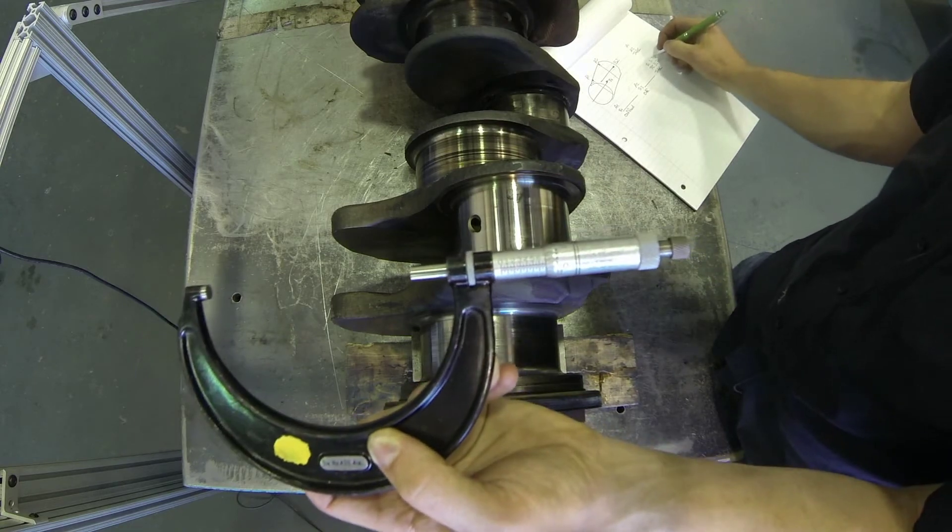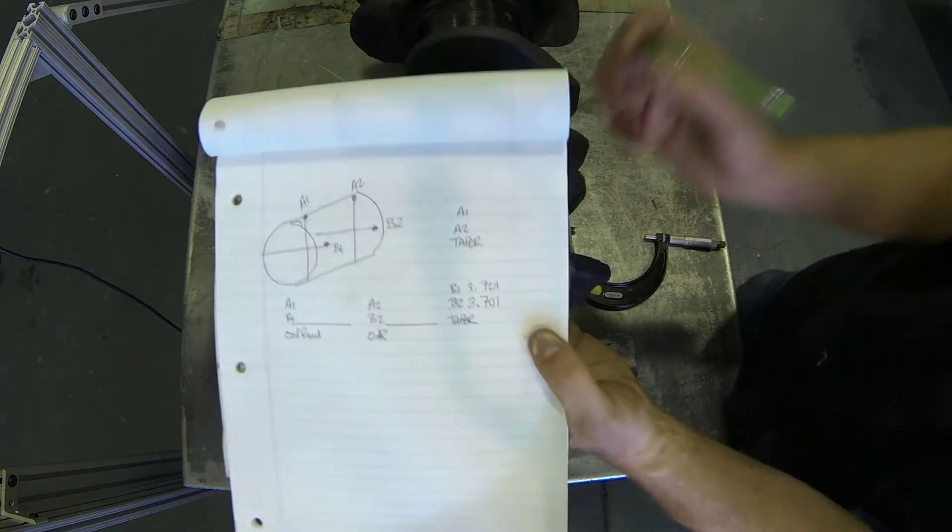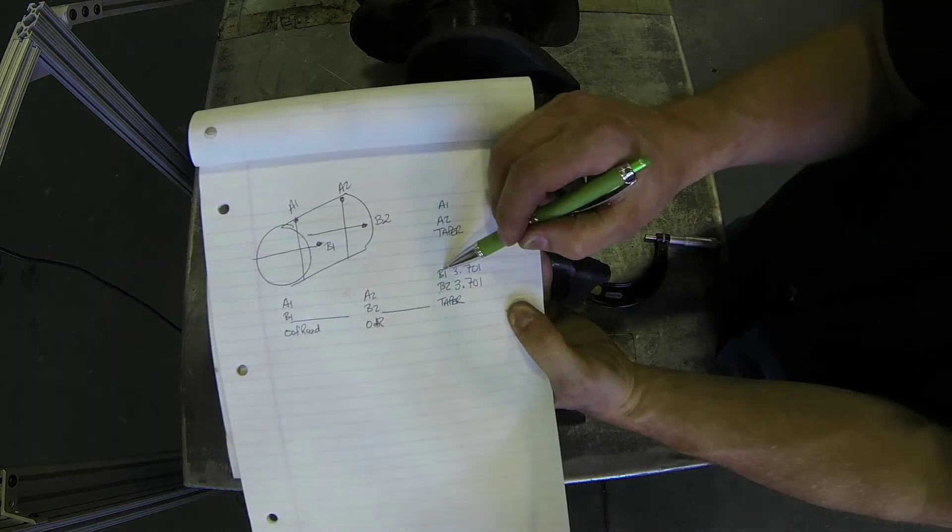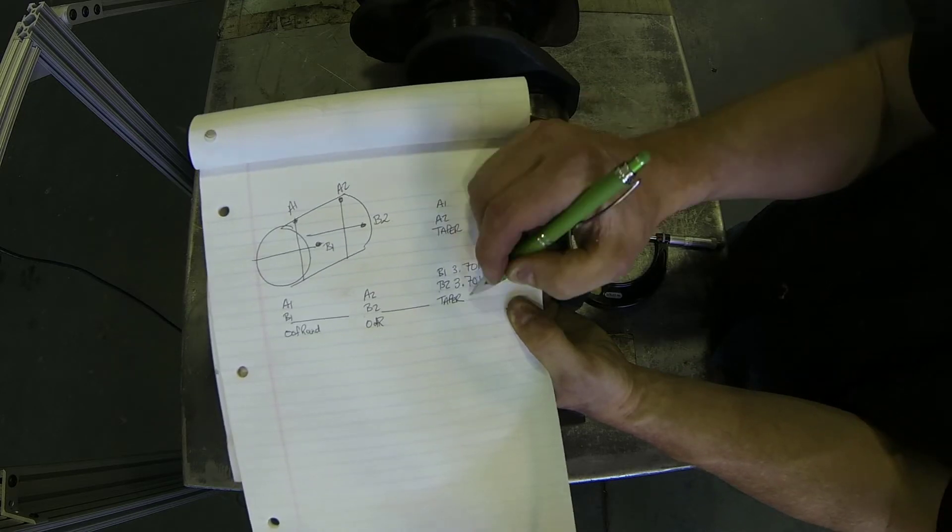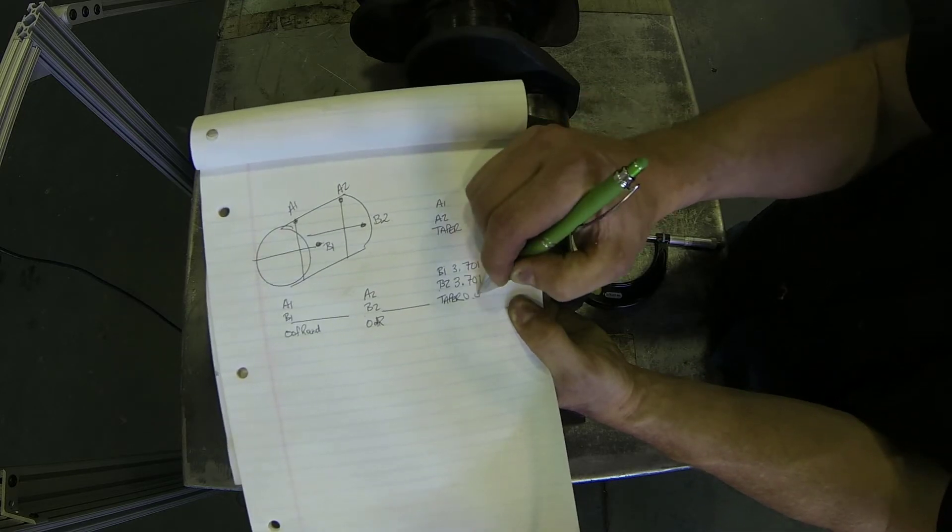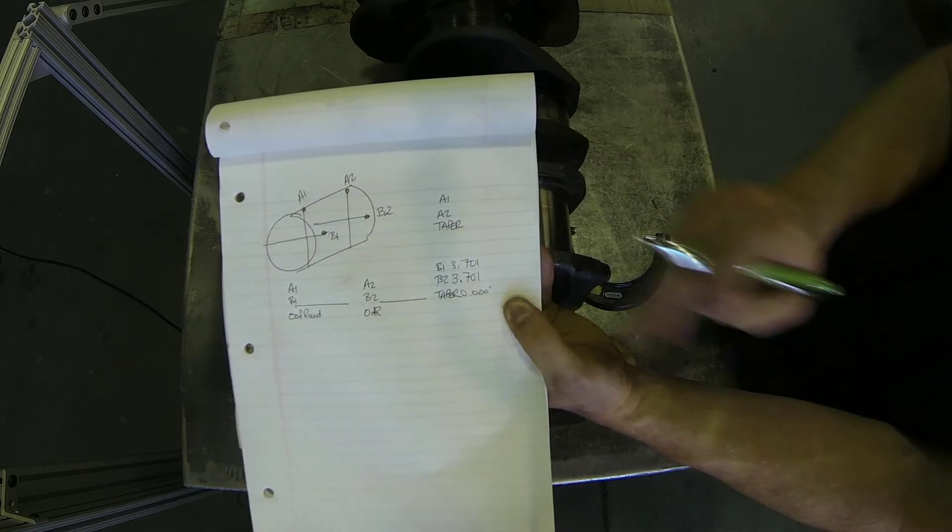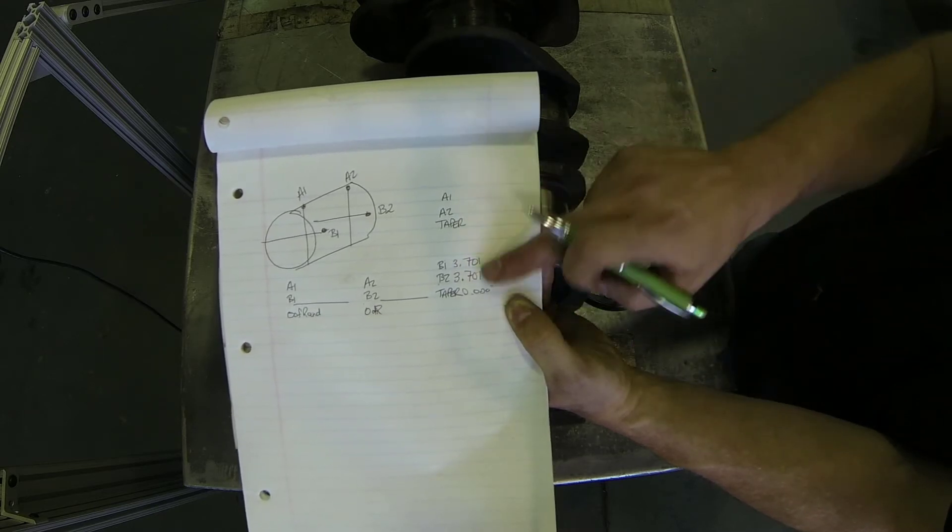So 3.7, and again my thimble measurement is one, so that means zero one. To actually calculate our taper, then, we would take this B1 measurement that I've got for 3.701, subtract it from 3.701, and what we get then is a taper of 0.000, which means that I have no taper at all and that journal is perfectly straight.